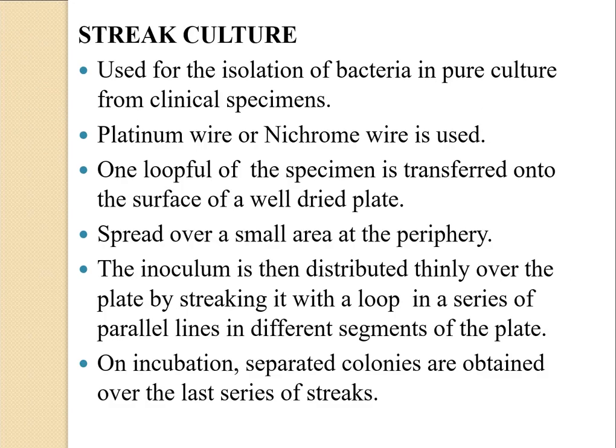In this method, we use either a platinum wire or a nichrome wire. One loopful of the specimen culture is transferred onto the surface of a petri plate containing nutrient agar. The specimen is spread thinly over the plate by streaking in four quadrants. On incubation, separate colonies are obtained over the last series of streaks.